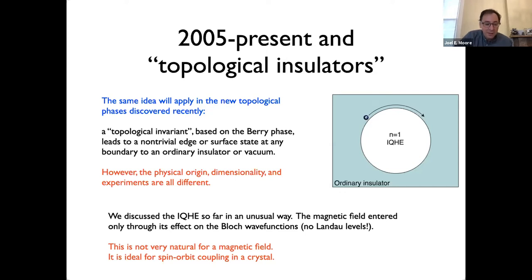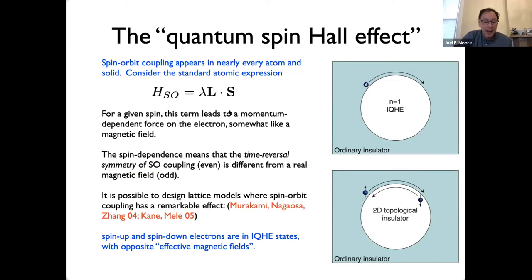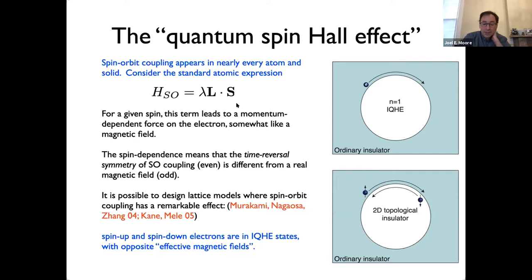Instead of an external magnetic field, I want to think about spin-orbit coupling, which is present in almost all crystals. In a rough sense it looks like a magnetic field that depends on spin: for L·S like in an atom, focusing on L_z S_z, spin-up sees a momentum-dependent force like a magnetic field, while spin-down sees it pointing the opposite direction. This led to the quantum spin Hall effect — the 2D topological insulator — with two copies of the quantum Hall effect, edge modes going opposite ways.